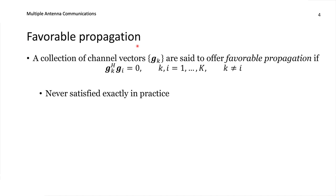It is preferred to have channel vectors that are orthogonal to each other, which is why we call this favorable propagation. A collection of channel vectors gk are said to offer favorable propagation if for any two different vectors k and i, their inner product equals zero. When that happens, K users can communicate as if they are alone in the system, even transmitting at the same time and frequency, thanks to their orthogonal channel vectors allowing the base station to separate them easily in space.